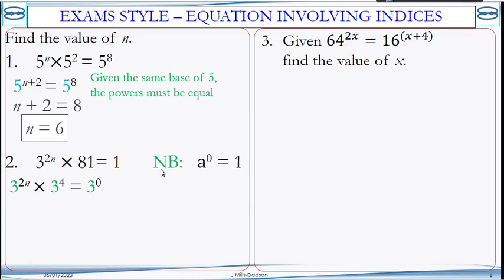This is already power of 3. So we change 81 to 3 to the power of 4. And we turn 1 also to 3 to the power of 0. Now we are multiplying, so we can add the powers and maintain one of the bases. And since they all have the same base, then the powers must also be equal.